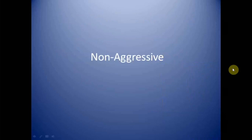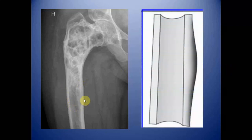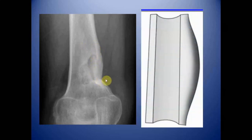In non-aggressive patterns: this case of extensive fibrous dysplasia involving the right femoral head, neck, and proximal diaphysis shows a thin unilamellar type of periosteal reaction in this benign entity. This case of chronic osteomyelitis involving the distal metaphysis of the femur shows thick solid periosteal reaction.